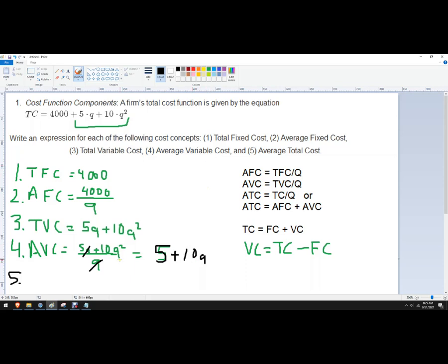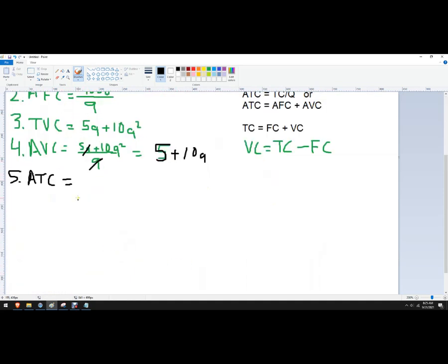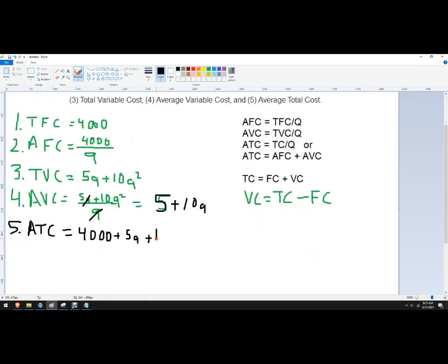Or we could do it a more traditional way. So average total cost is going to be the whole expression. So it would be 4,000 plus 5Q plus 10Q squared divided by Q.